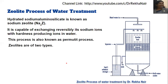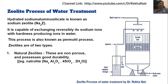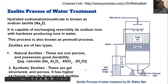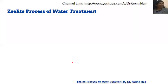This process is also known as the permutit process, and we have two different types of zeolite: natural zeolite and artificial zeolite. Natural zeolite has the formula Na₂Al₂O₃·SiO₂·4SiO₂·2H₂O. These are non-porous and have good durability. The synthetic zeolites are gel-structured and porous, and have better exchange capacity as compared with natural zeolite.